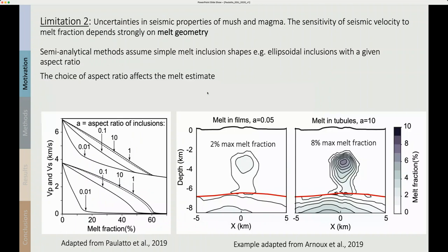Let's look at the second limitation: the uncertainties in the seismic properties of mush and magma. The uncertainties in the rock physical models that link melt fraction to seismic velocities strongly depend on the melt geometry. Typically we use semi-analytical methods that assume simple melt inclusion shapes like ellipsoidal inclusions with a given aspect ratio. I'm showing here predictions for one of these methods for different aspect ratios and you can see that there's a range of different curves. If we were to use this to predict melt fraction we would get a range of different results. So if we measured a Vp of 4.7 in this case we could get a melt fraction of 23 percent with one assumption of aspect ratio or as low as 9 and as high as 32 percent.